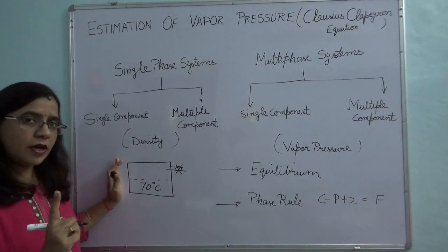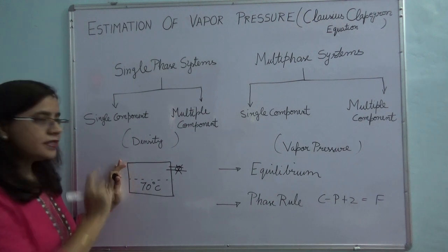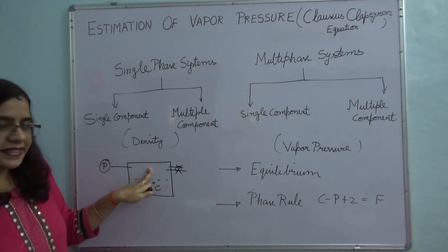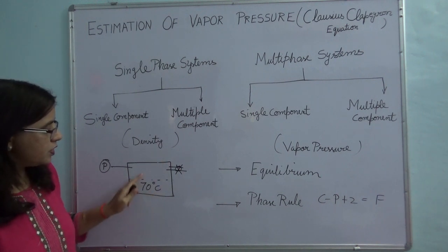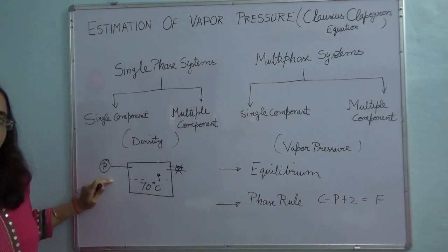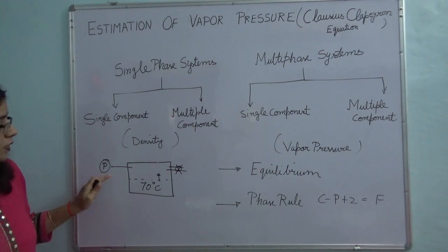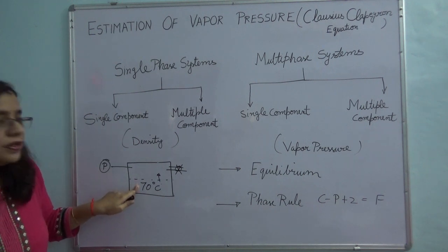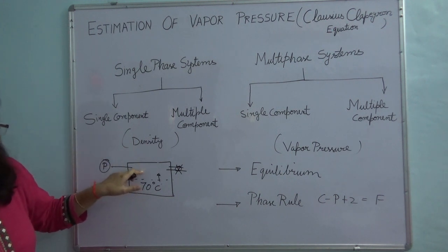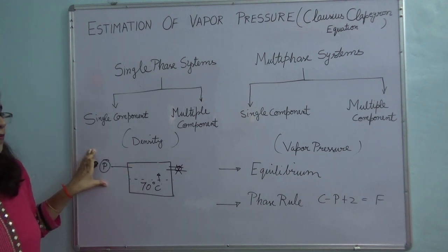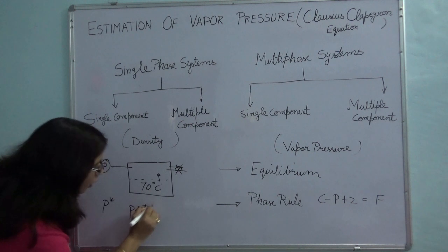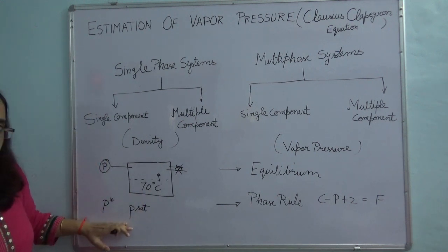So I have a single component, that is water, which is in liquid state and present at 70 degrees centigrade, taken in an evacuated chamber. Now I measure the pressure. What will happen is that as soon as you close everything, water will start leaving the liquid phase and go into the vapor phase. Correspondingly the pressure will keep on changing until a point when the pressure reading will not change. So for a temperature of 70 degrees you will have a fixed pressure exerted by the vapor, and that pressure is known as vapor pressure. We usually denote vapor pressure by P* or sometimes P-sat, which is also known as saturation pressure.